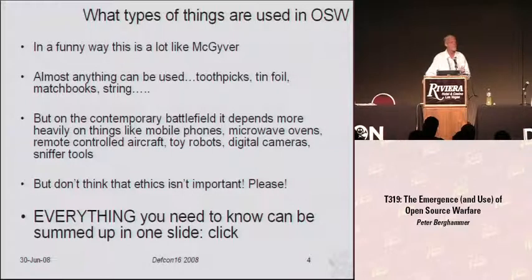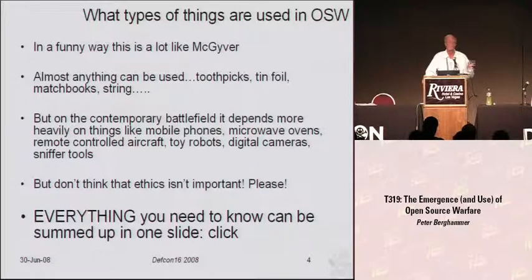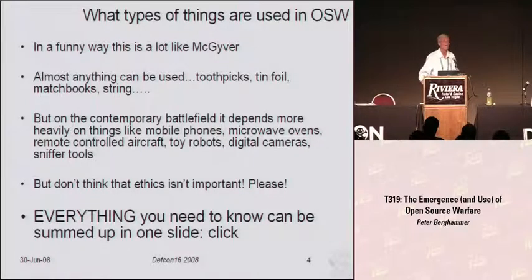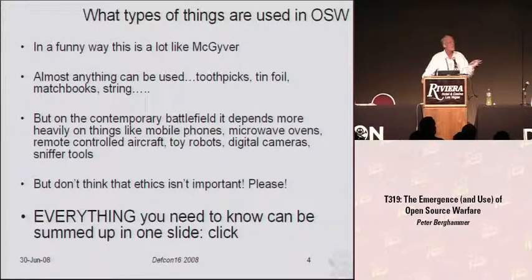On the modern battlefield, we see a very heavy and almost over-reliance on technology, whether it's the United States, the Israelis, or conventional armies recently engaged. We're seeing something of a parity in what's taking place in Ossetia with Georgia and Russia. But counterinsurgents have changed their tactics — they use microwave ovens, mobile phones, remote-controlled aircraft, toy robots, digital cameras, sniffer tools. There's also a war rocketry example we'll look at.